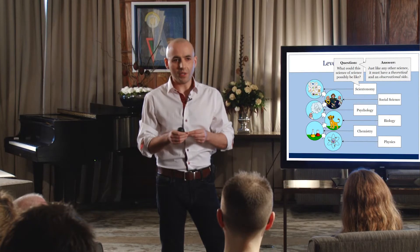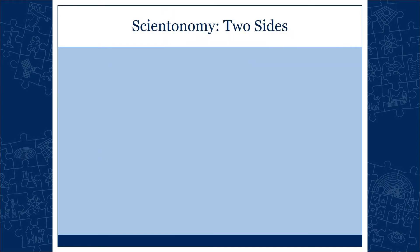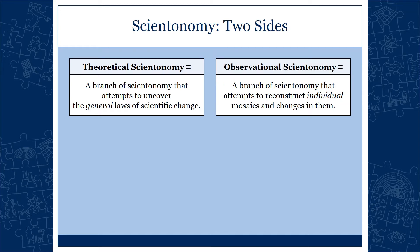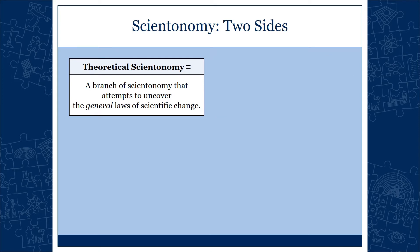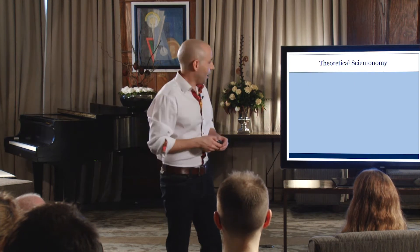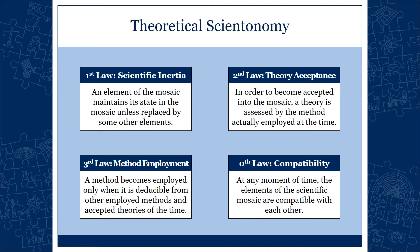So what could this science of science possibly be like? Just like any other science, we need an observational level and a theoretical level. There is no other way — you cannot have just an observational level and just gather data, and you cannot simply have a theoretical level. You need both. Theoretical scientonomy is the branch that will attempt to uncover the general patterns and laws that govern the process. We currently have four laws — your axioms and the theorems that follow.